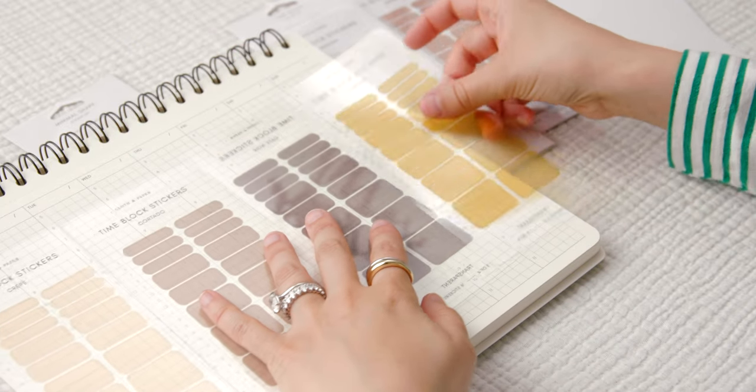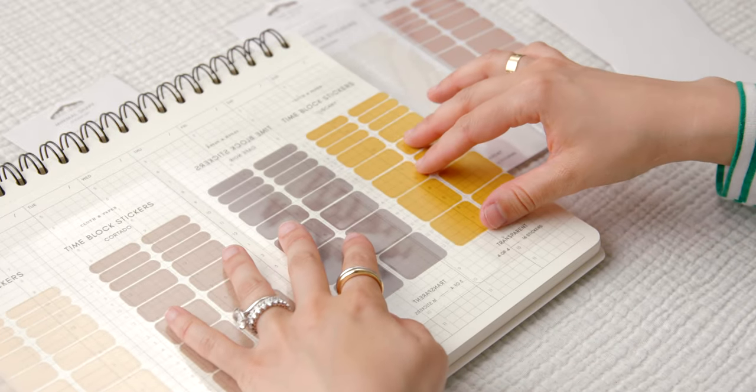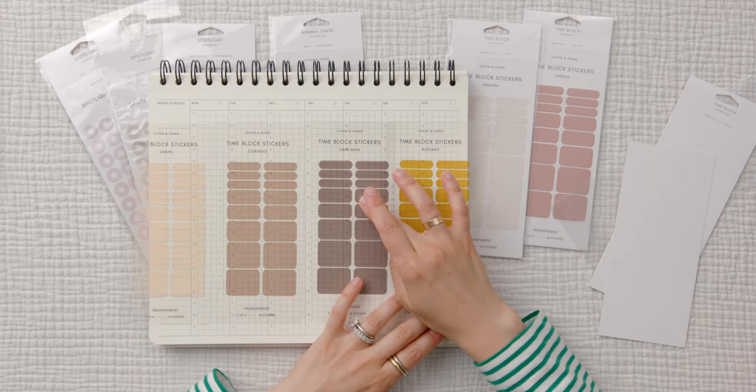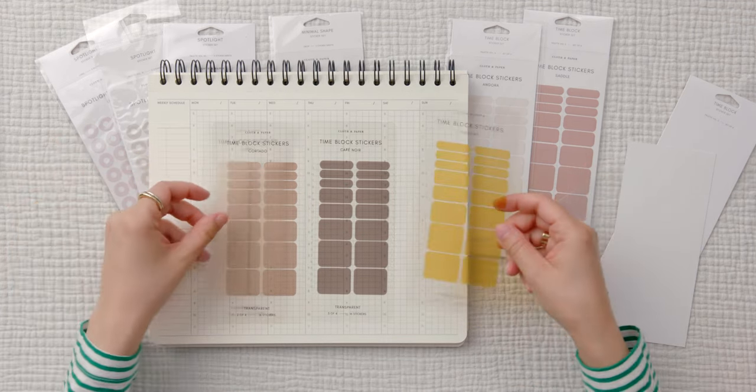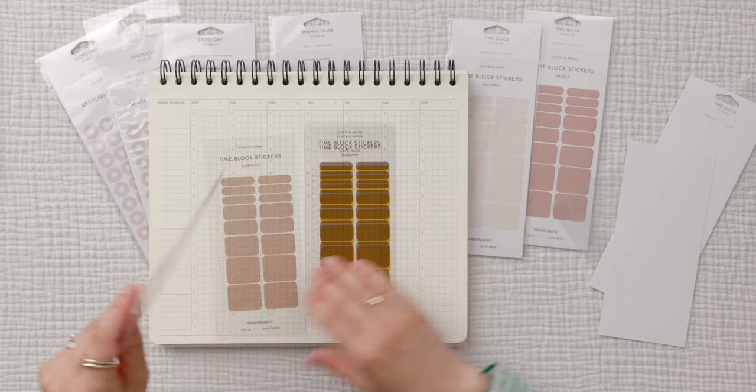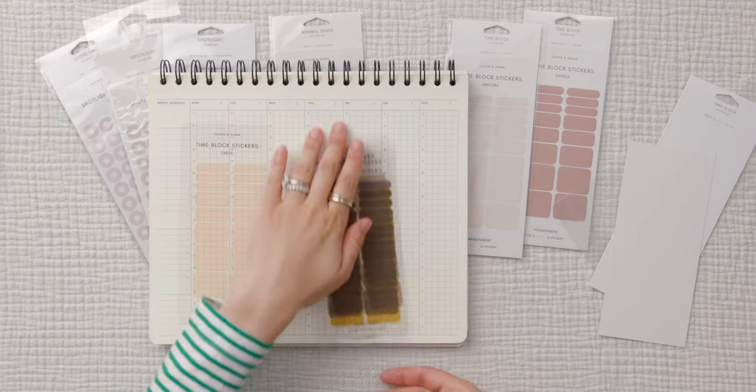Tuscany is bright. So you have Tuscany, Cafe Noir, Cortado, and then Crepe. So that pack there comes with those four colors.